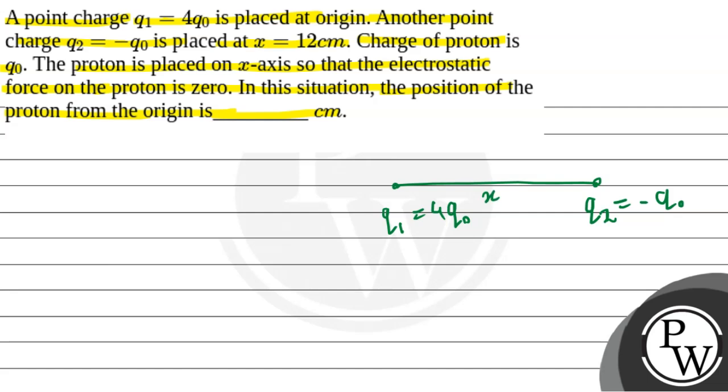The charge of proton is placed such that the electrostatic force on it is zero. So we believe the proton is placed at position Q3, which is equal to Q0, at some distance which we are going to find in this question.